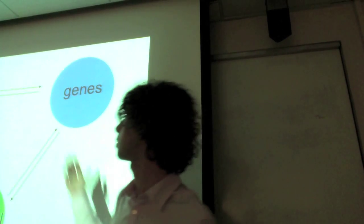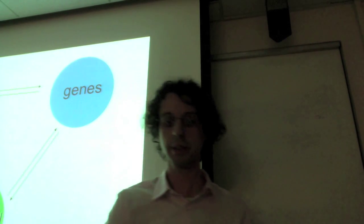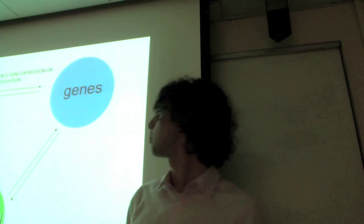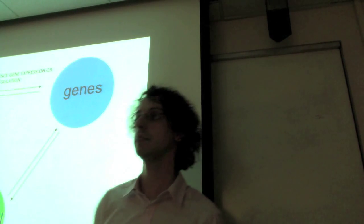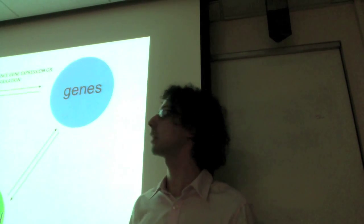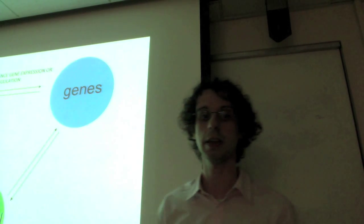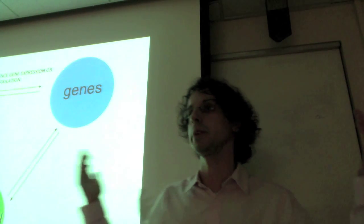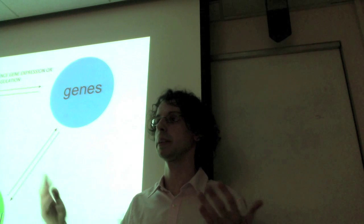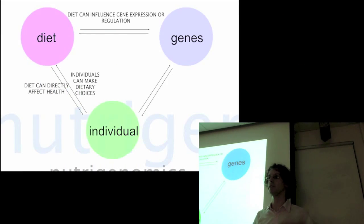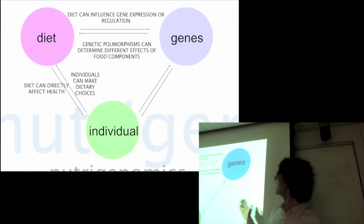So the branch of nutrition that investigates the relationship between diet and genes is nutrigenomics, which I try to summarize in this little scheme here. This just shows the traditional approach: diet can directly affect health. And I think I don't need to make the point, all of us here know that what we eat can prevent or increase risk of disease.